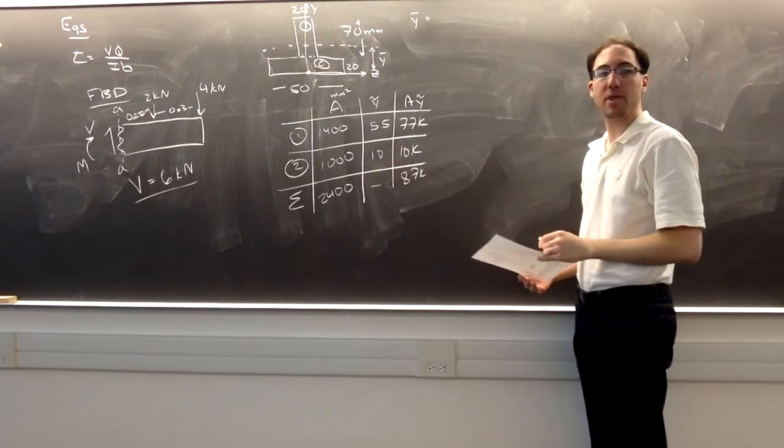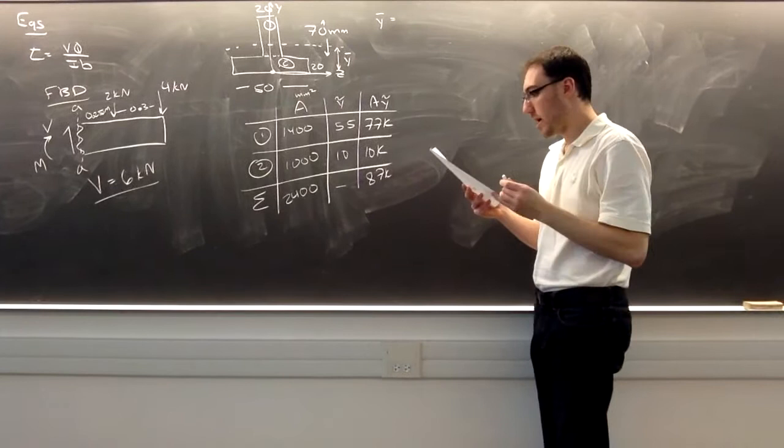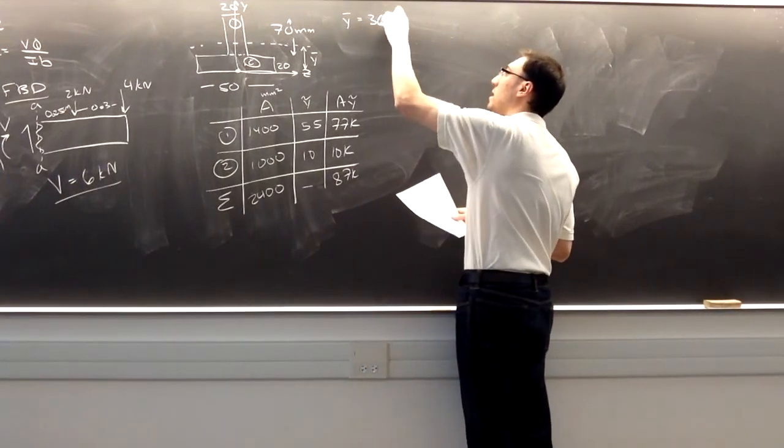This will be 87,000 over 2,400, which will be 36.3 millimeters.